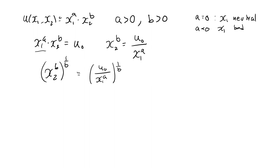On the left hand side, I then have x2 raised to b times 1 over b, which is 1, so x2. On the right hand side, I have u0 raised to 1 over b divided by x1 a over b.